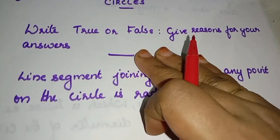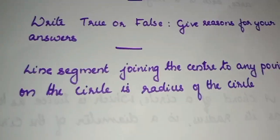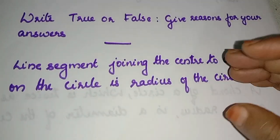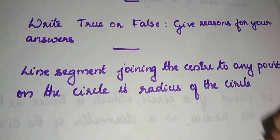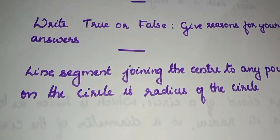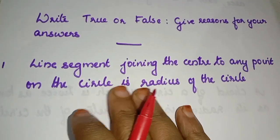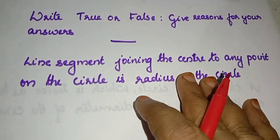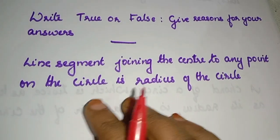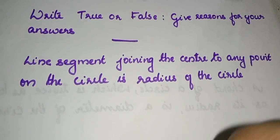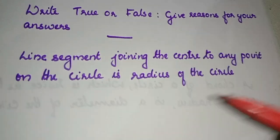Write true or false and give reasons for your answers. We are going to give you the answer. The first question is: Line segment joining the center to any point on the circle is a radius of the circle.